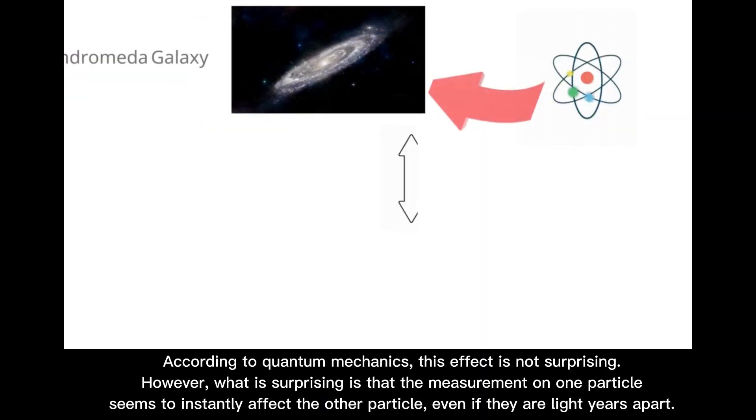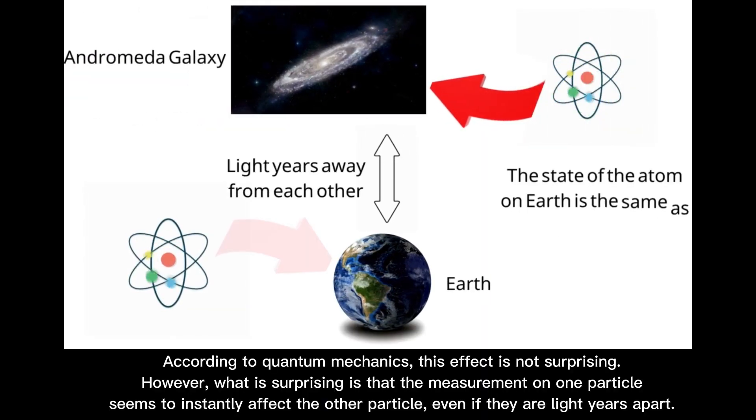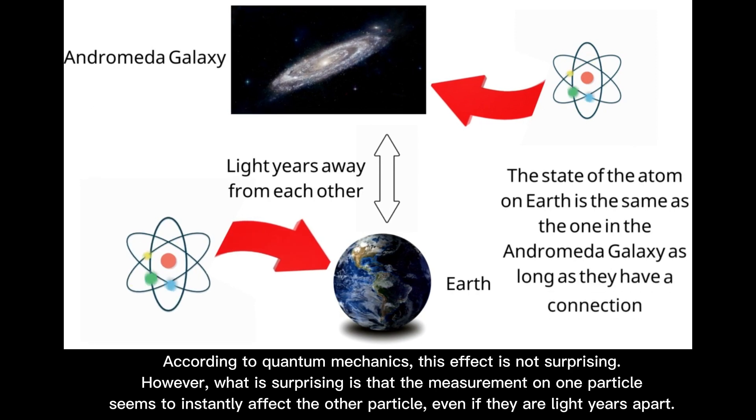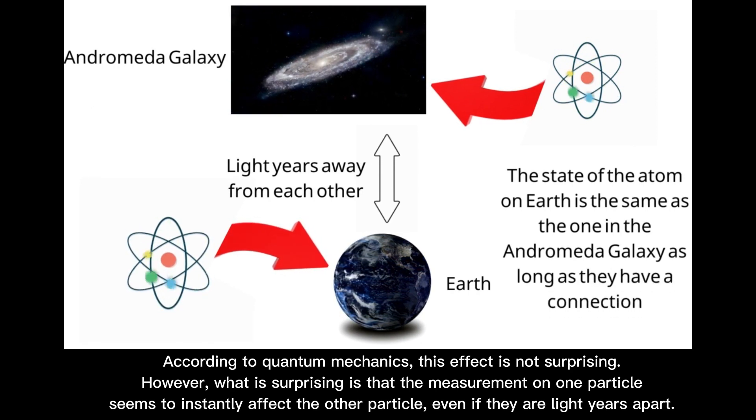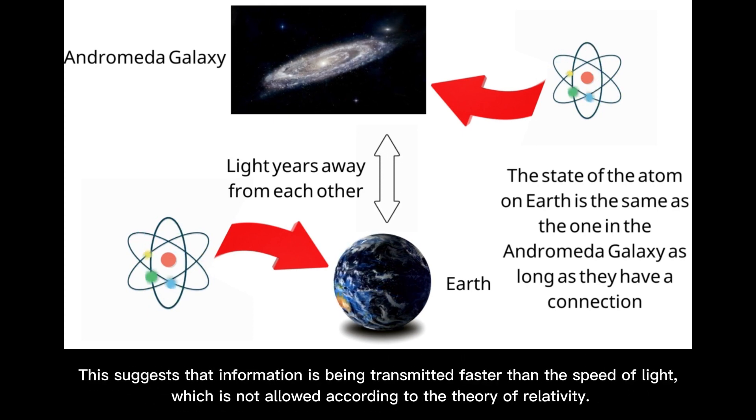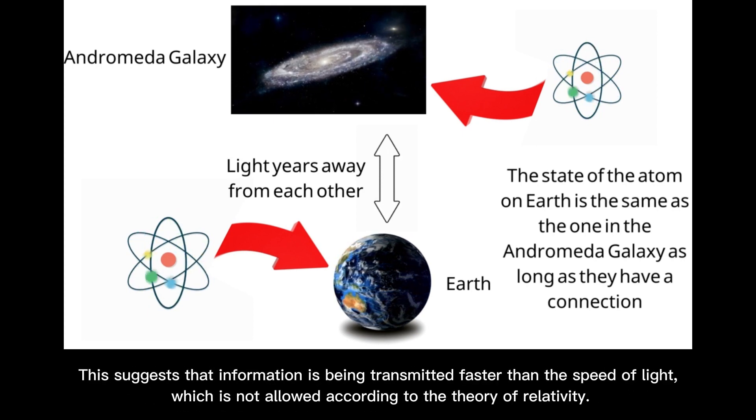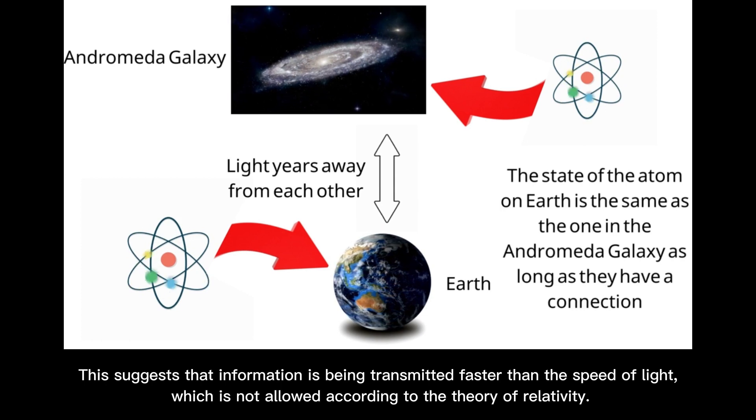This effect is not surprising, however. What is surprising is that the measurement on one particle seems to instantly affect the other particle, even if they are light years apart. This suggests that information is being transmitted faster than the speed of light, which is not allowed according to the theory of relativity.